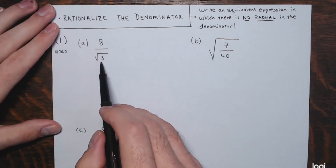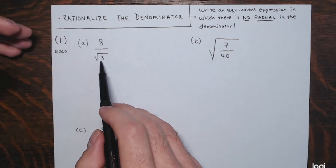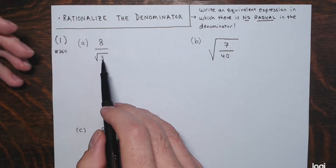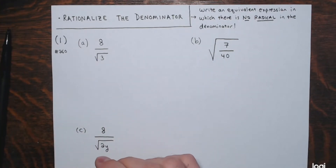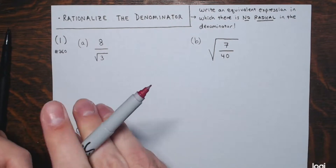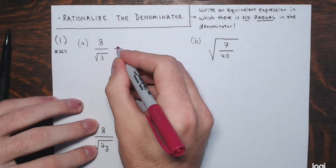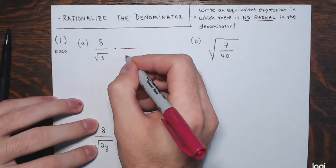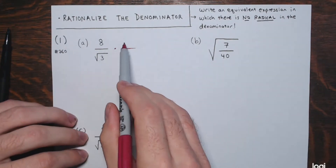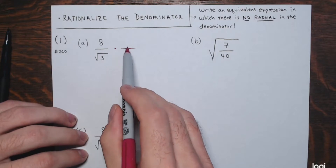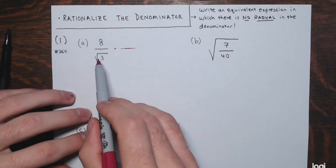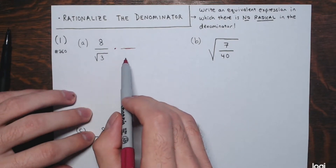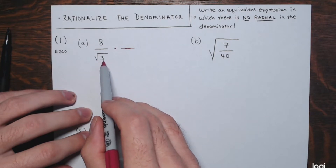We have 8 divided by the square root of 3. This has a radical in the denominator — the square root of 3. We're going to multiply the numerator and denominator by the same thing. Remember, if you multiply the numerator and denominator by the same number, you don't change the value — it's like multiplying by 1. I want to multiply by something that'll get rid of the square root in the denominator.